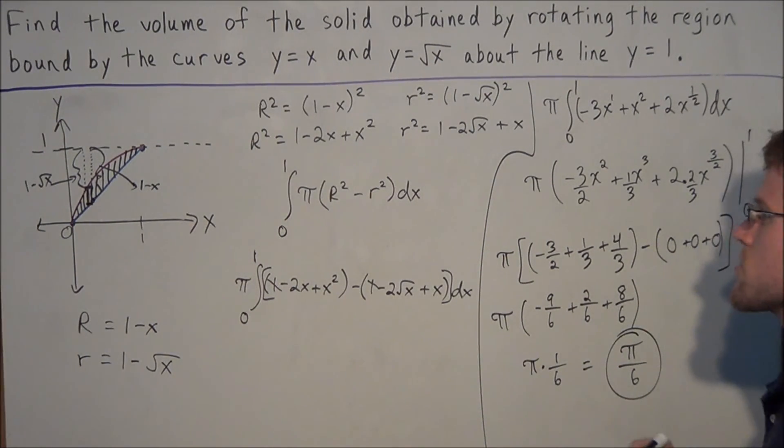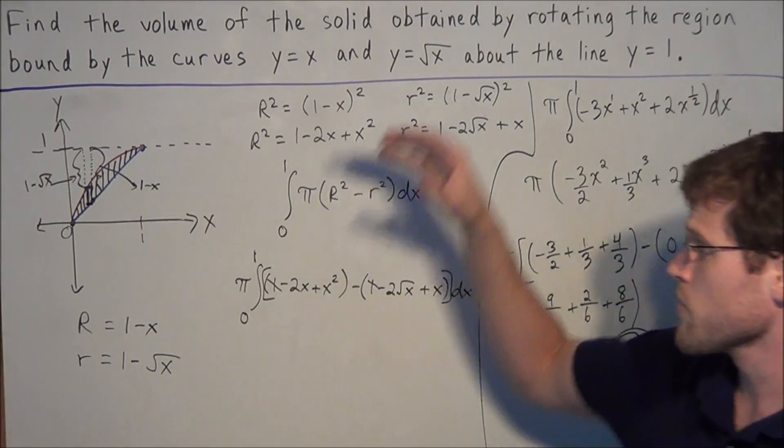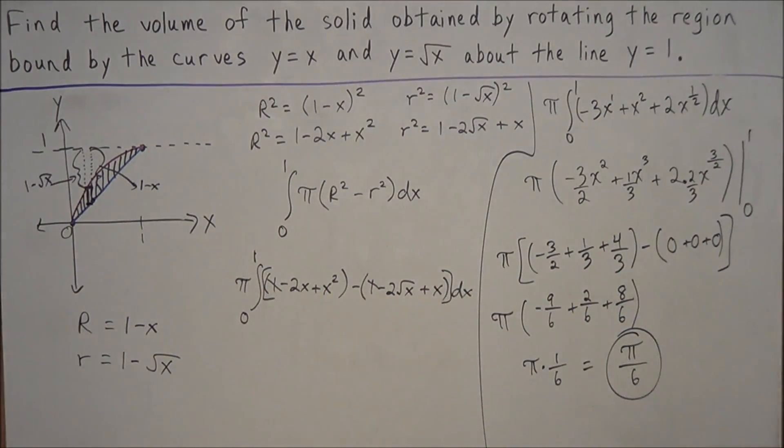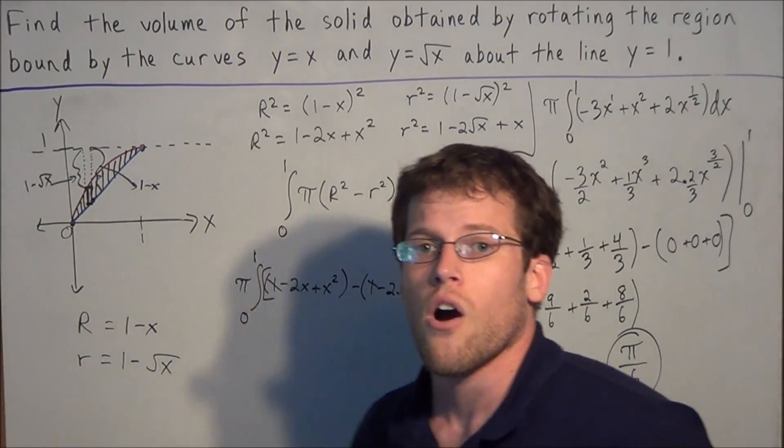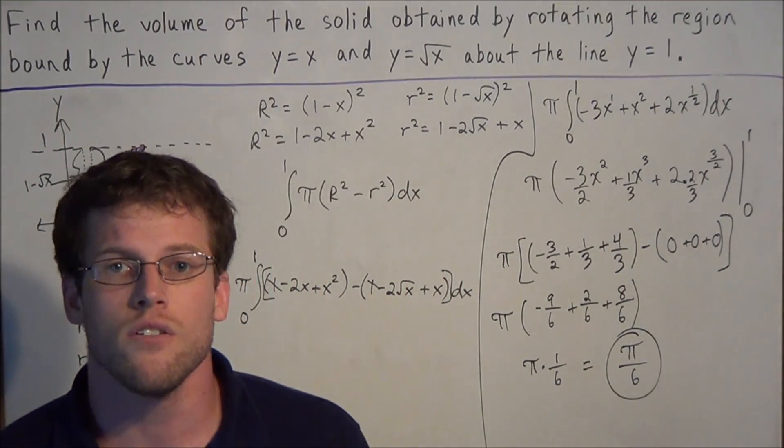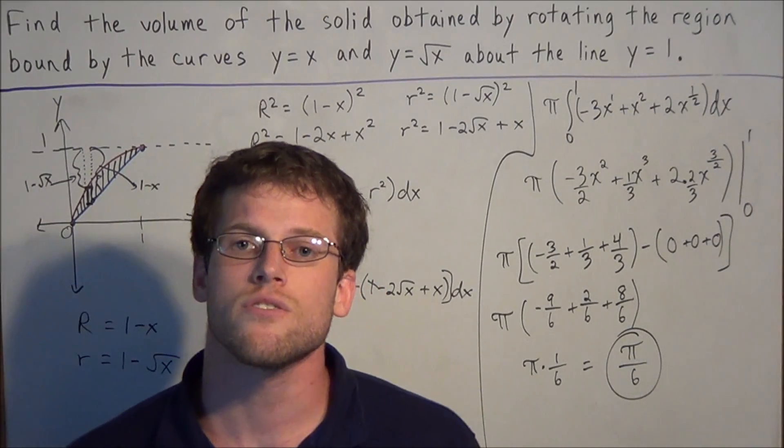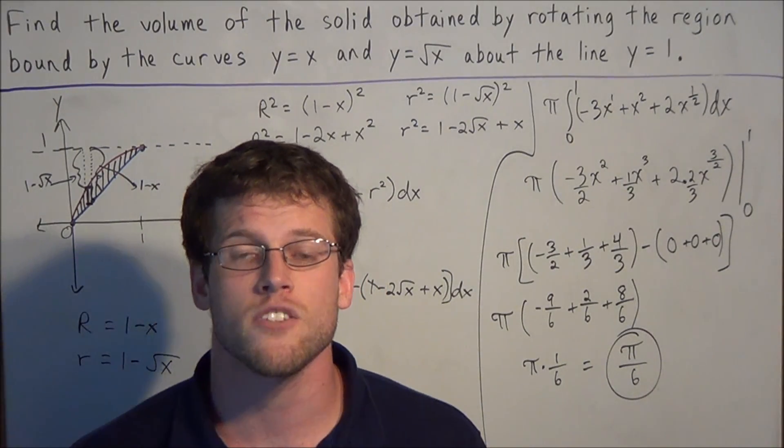So this is our final answer. Our volume of revolution for this solid, we wind up with π over 6. Okay, well this is going to conclude this video on solids of revolution integrals. Thank you all for watching and I hope that this was helpful.